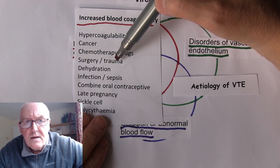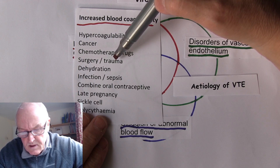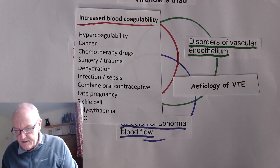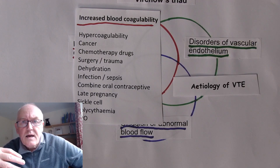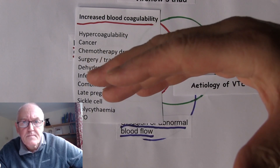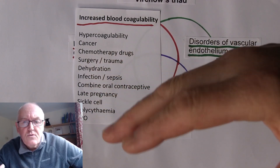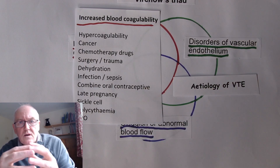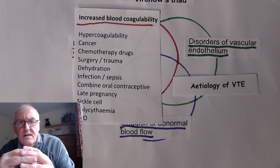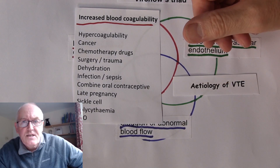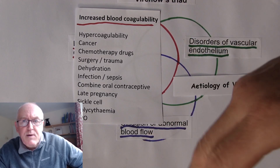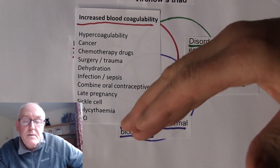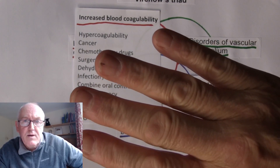Surgery or trauma can increase the coagulability of the blood. As is fairly obvious, in surgery and trauma there can be bleeding and blood loss. In order to stop the blood loss, the platelets are going to coagulate and stick together to initiate the full coagulation cascade. This means that if there's injury, in order to stop the hemorrhage, the platelets can actually be used up and there can be a reduction in the number of platelets.